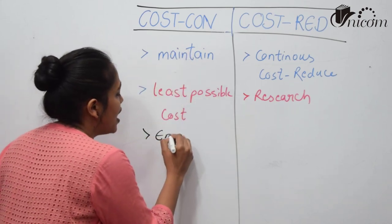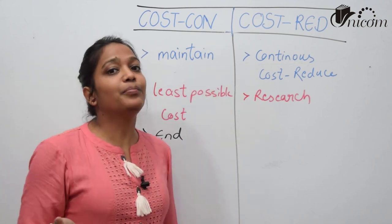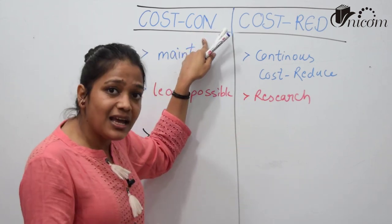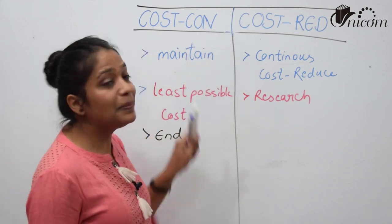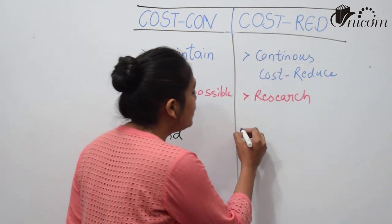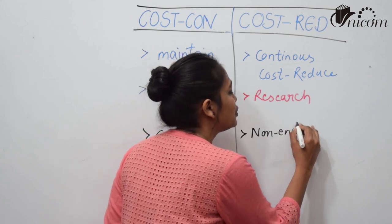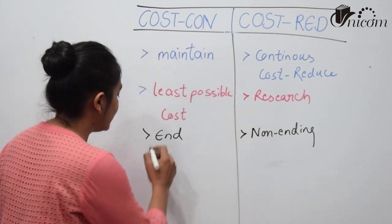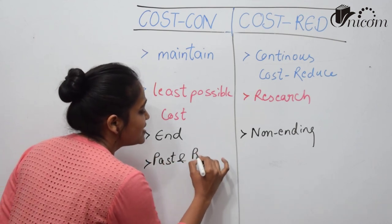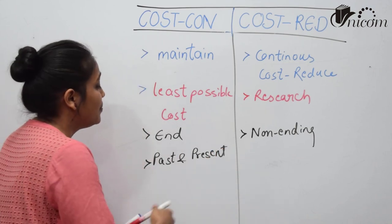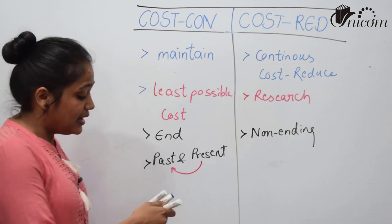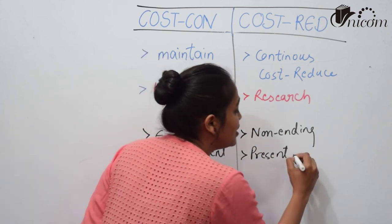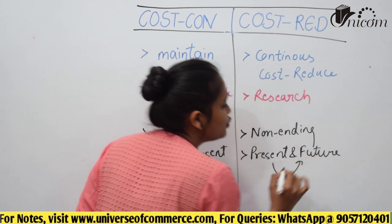The third difference: cost control procedure ends when actual performance matches the standard. Recall the steps — standard, actual performance, comparison, and corrective action. Once actual matches standard, the process ends. But cost reduction never ends — it is a non-ending procedure. You continue trying to reduce cost further. Also, cost control deals with existing circumstances and past standards — matching present performance with past standards. Cost reduction deals with the present and future: how much cost has come, and how much can we reduce it going forward.